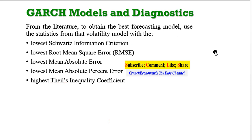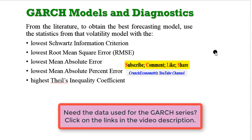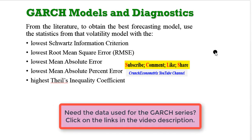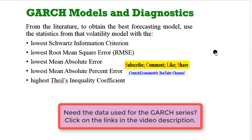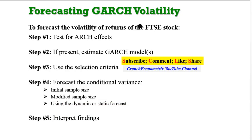If you had to choose the best forecasting model, you have to choose among competing models that has the lowest SIC, the lowest root mean square error, the lowest mean absolute error, the lowest mean absolute percent error, and the model with the highest Theil's inequality coefficient. These are the steps I'll be taking to forecast the volatility of returns.